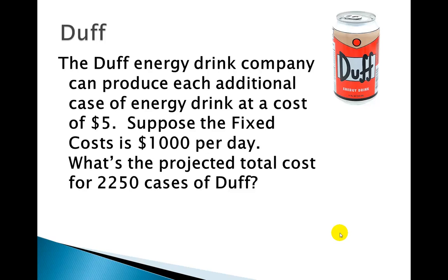So let's do an example here. I got Duff energy drink. Yeah, I've been drinking it myself as you can tell. And it produces each additional case is going to cost them five dollars to produce. And so let's say we got fixed cost of a thousand dollars per day. And then what's the projected total cost for 2,250 cases of Duff? Even though we're using per day kind of, we're basically developing a formula that we can use for each day. And our independent variable, our input is going to be the number of cases.